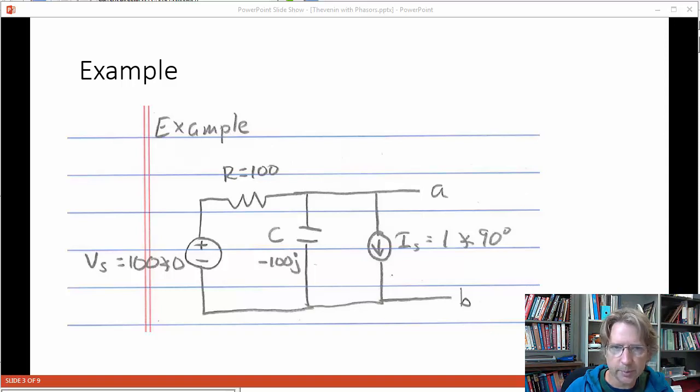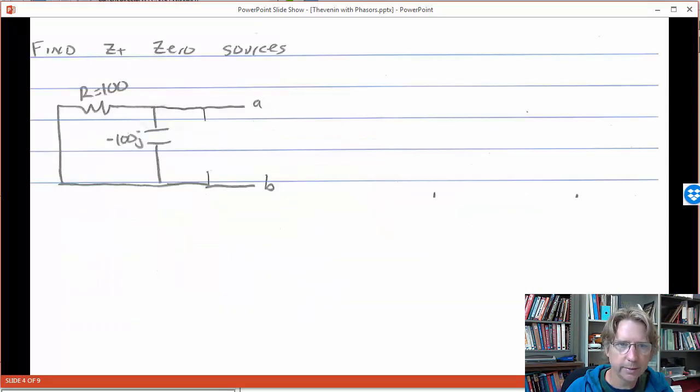Alright so the first step is to find the Thevenin impedance ZT. So we have to zero the sources, so to make the voltage source zero it's replaced here with a short circuit. To make the current source zero it's snipped away here, make an open circuit.